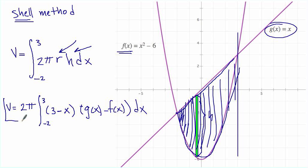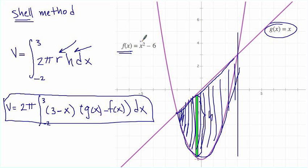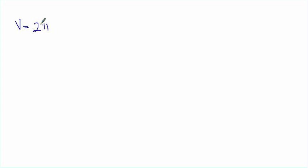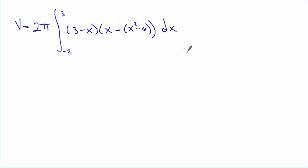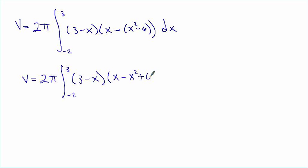Bringing this to the next page, the volume equals 2π times the integral from negative 2 to 3 of (3 minus x) times (g(x) minus f(x)) dx. Here g(x) is x and f(x) is x² minus 6, so this simplifies to 2π times the integral from negative 2 to 3 of (3 minus x)(x minus x² plus 6) dx.